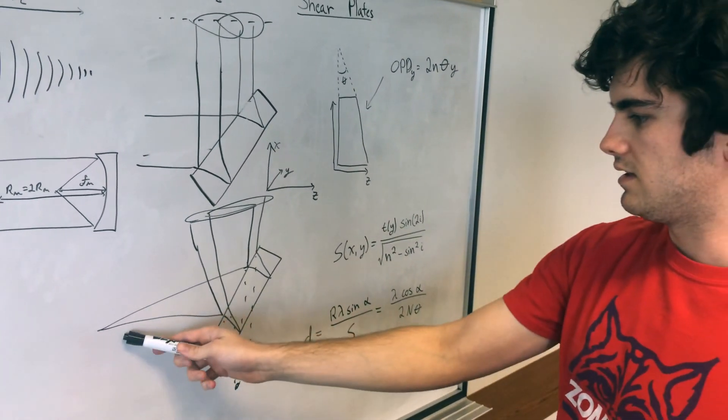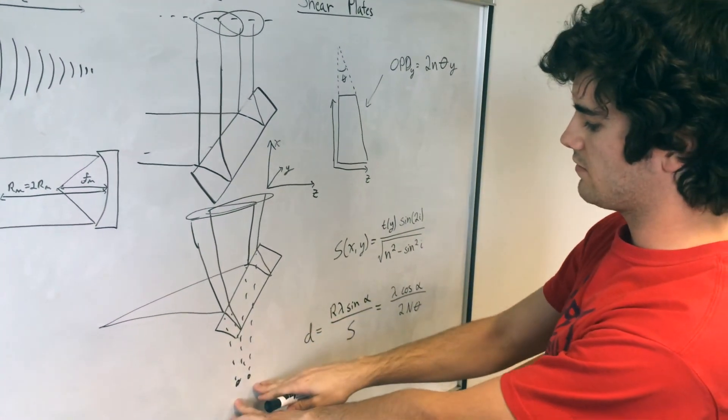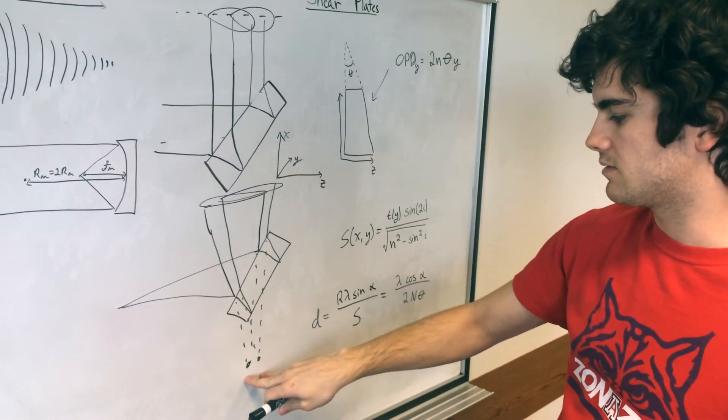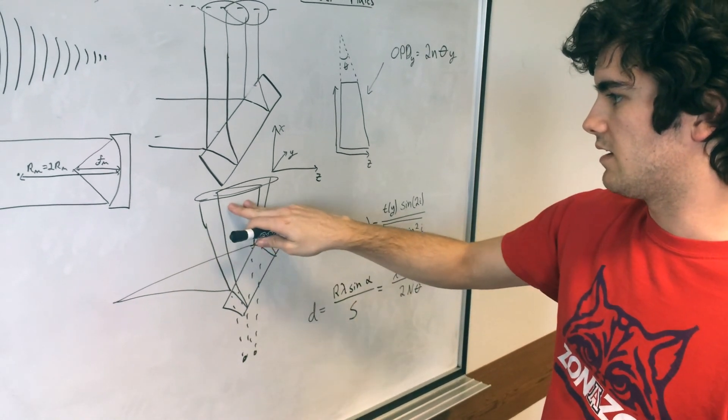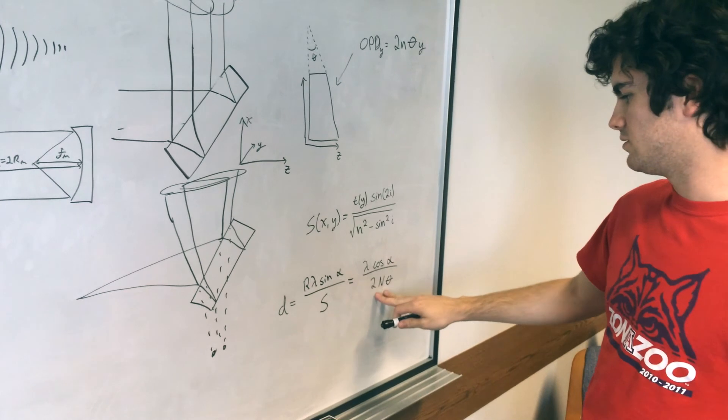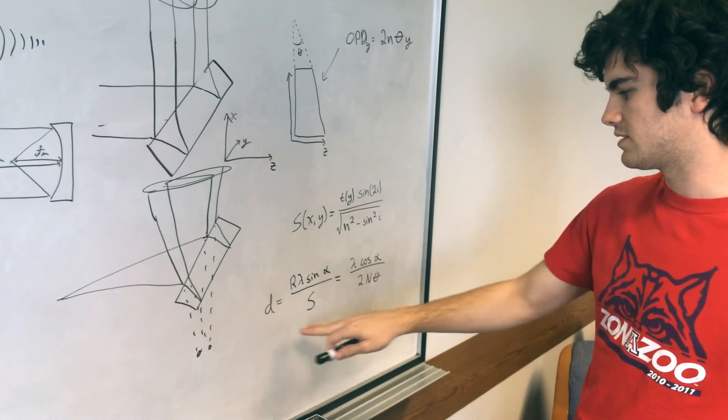Finally, if a spherical wavefront is coming in, it creates two virtual spherical point sources, which then are separated in both X and Y space here, and creates a rotation and expansion of the fringes up above. We will be using this equation later to determine the radius of curvature of the mirror based on the fringe spacing.